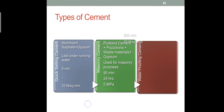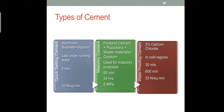Waterproofing cement is similar to water repellent cement, but it is specifically used in frost regions and frozen areas. All other characteristics are similar, except that more calcium chloride is added to the cement, which is what makes it a waterproofing cement.